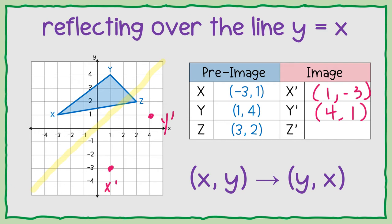And then last but not least, the point z was 3, 2, but if they switch places, that's going to turn into 2, 3.